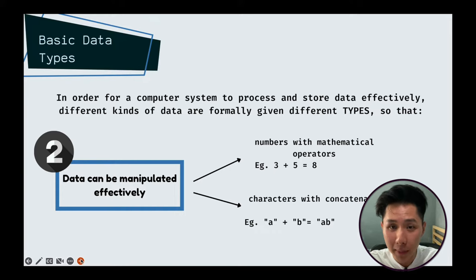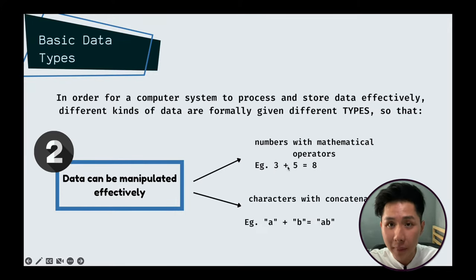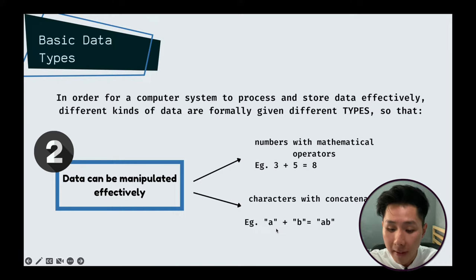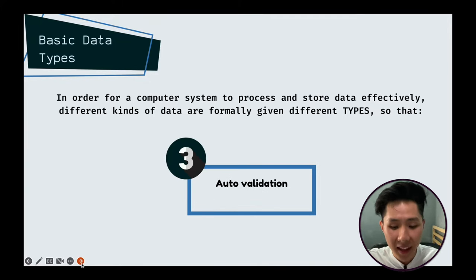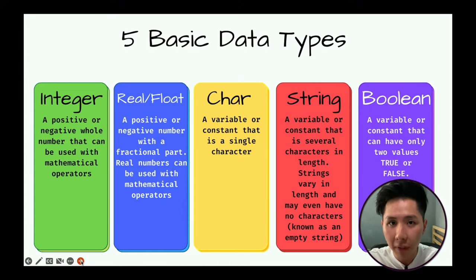Data can also be manipulated properly based on its type. For instance, if our data type is a number — an integer — when we sum two numbers, the computer knows to compute 3 plus 5 equals 8. Whereas if your data type is a character, the plus symbol means the computer needs to concatenate those two characters. Another reason for data types is auto-validation. Now let me introduce you to the five data types in programming.